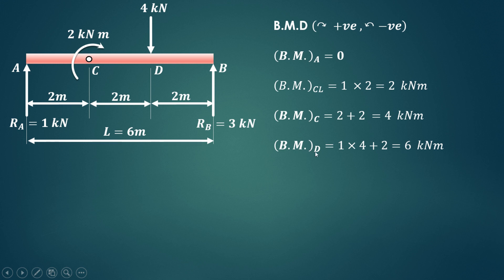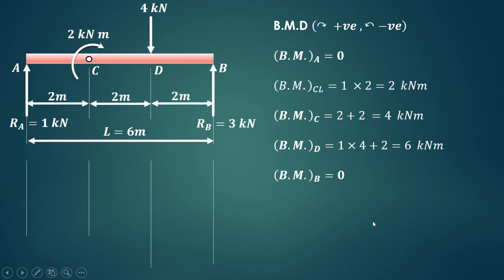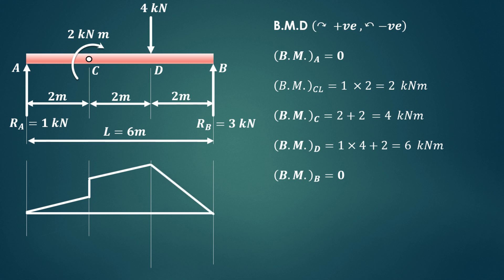For the bending moment at D, consider all forces and moments to the left. Ra produces a clockwise moment of 1 x 4 equals 4 kNm, plus the external moment of 2 kNm at C, giving a total of 6 kNm at D. Bending moment at B is 0. Drawing the diagram: 2 kNm just left of C, rising to 4 kNm at C, increasing to 6 kNm at D, then reducing to 0 at B. This completes the shear force and bending moment diagram for a simply supported beam with an external moment and a point load.